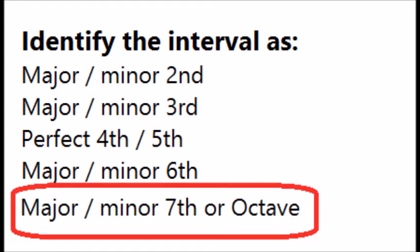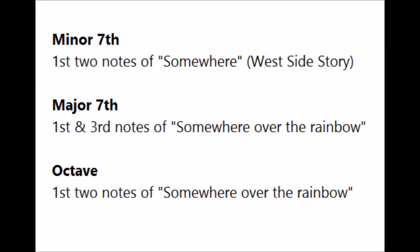As in the previous videos, sometimes it is helpful to think of various tunes in order to recognize the intervals. The minor 7th, for example, occurs at the beginning of the song 'Somewhere' from West Side Story. The first two notes of that tune make a minor 7th, and the major 7th occurs between the first and third notes of 'Somewhere Over the Rainbow'.